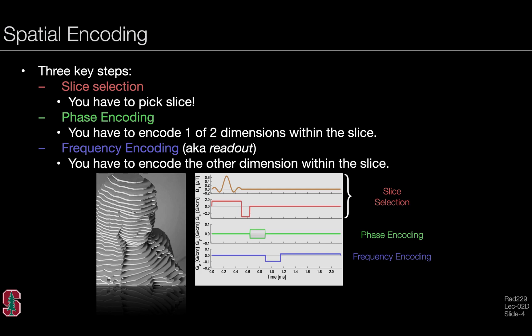Spatial encoding includes three key steps. Slice selection, that is, you have to pick a slice. Phase encoding, in that you have to encode one of two dimensions within the slice. And frequency encoding, also known as readout, you have to encode the other dimension within the slice. And these events happen in sequence: you first slice select, then phase encode, and then frequency encode for conventional Cartesian k-space imaging.